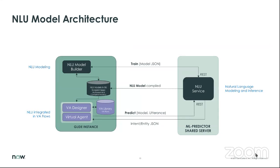An important component of the NLU model is what we call the predictor shared server. It's required that the prediction server be in the same data center as your ServiceNow instance — it is not leaving ServiceNow. We start off with the NLU model builder, which I'll demonstrate later in the presentation. The models are housed in the BU scoped applications — for HR, they're in other scopes — but those models are housed in their private scopes when built in the model builder.